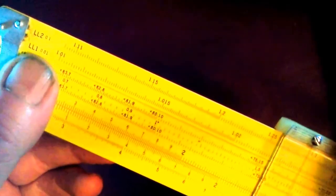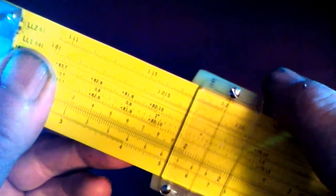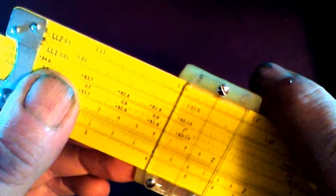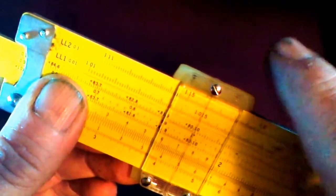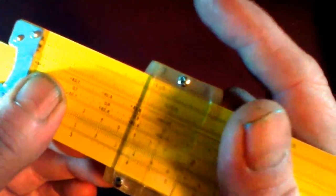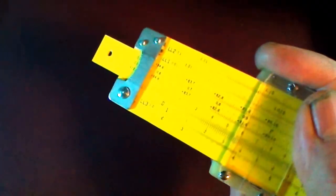Then, move your slider to the number 6 on the D scale. Take your slide rule and firmly grasp it.